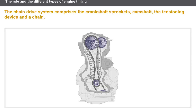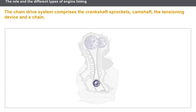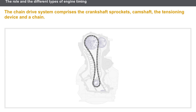Now let's take a look at the chain drive. The timing principally comprises the crankshaft sprocket, the camshaft sprocket, the chain tensioning device, and a chain. Certain engines are equipped with a self-adjusting sprocket to drive the second camshaft.